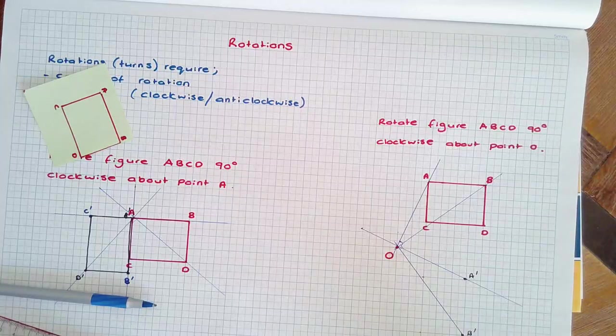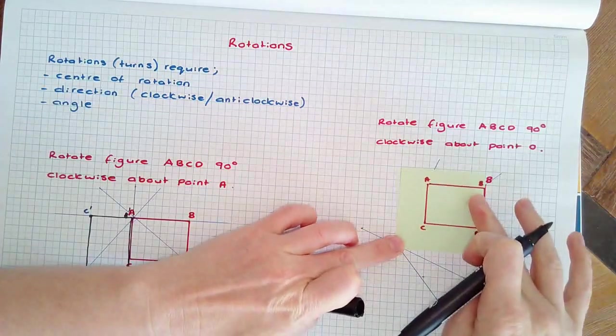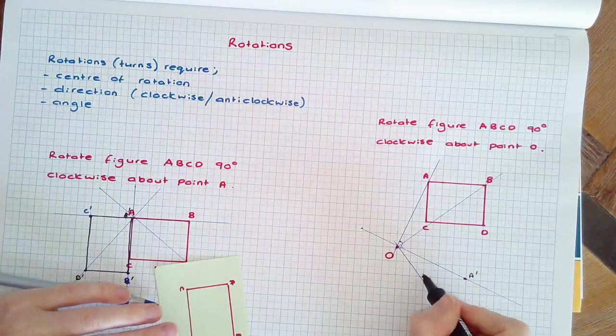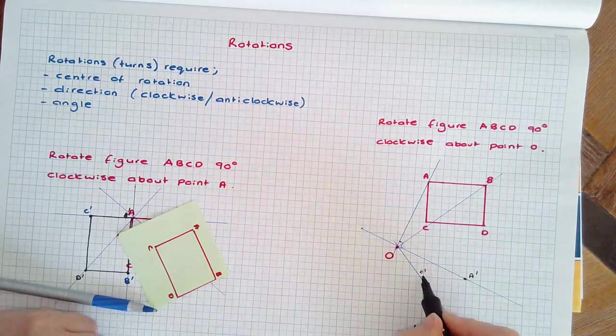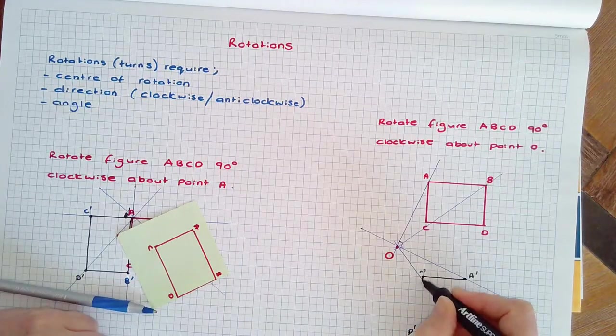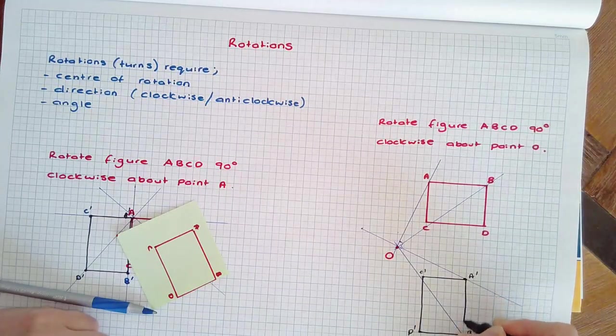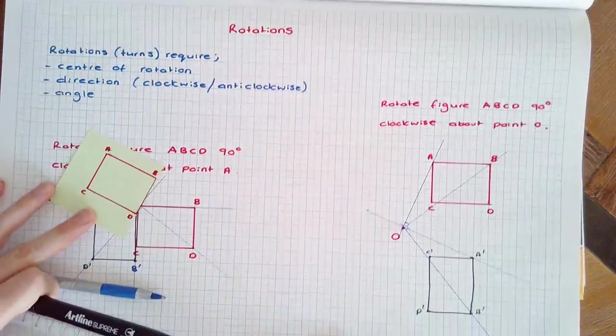And we can continue to do that for each point. And you will then find, rotating about point O, we have C' and D'. Once we've got all our individual vertices, we can connect them to find the new image that has been rotated 90 degrees clockwise about point O.